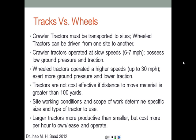The decision to use tracks or wheels depends on use and availability. Crawler tractors must be transported to sites — they cannot be driven on public highways as they would damage asphalt — whereas wheel tractors can be driven from one site to another. Crawler tractors operate at slow speeds of six to seven miles per hour, with low ground pressure and high traction. Wheel tractors operate at high speeds up to thirty miles per hour but exert more ground pressure and have lower traction. On muddy soil, a crawler tractor distributes weight as a line load across the tracks, whereas a wheel tractor concentrates it as a point load under the tires.